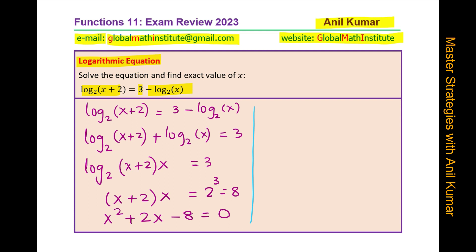Right. So we have x squared plus 2x minus 8 equals 0. Let us factor this. 4 times 2 is 8. So we can write this as x minus 4 times x plus 2. Right. That means x could be equal to 4 or x equals minus 2.